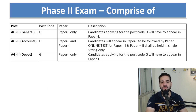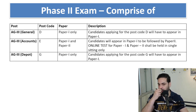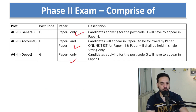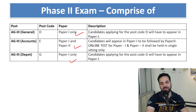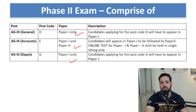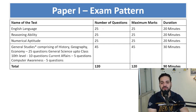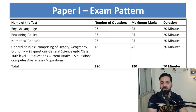In Phase 2, for General and Depot there is only Paper 1, but for Accounts there is Paper 2 as well, whose syllabus is a bit different according to the post. For Paper 1 in Phase 2, there is English Language, Reasoning Ability, Numerical Ability, and General Studies.